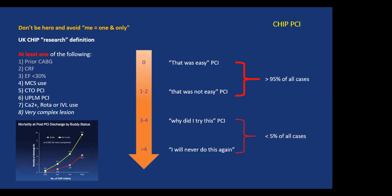What does going from one CHIP factor to three or four mean in practice? Zero factors — that's easy, regular PCI. One or two CHIP factors are cases many interventionalists do — a PCI you come out of and say it wasn't easy, which comprises about 95% of all cases. As the number of factors increases, you get into 'why did I try this and I'll never do it again' cases, which are a relatively small number. But by involving surgeons to provide hemodynamic support, we significantly improve success rate.